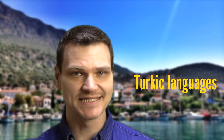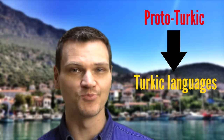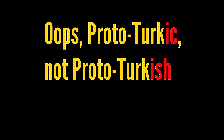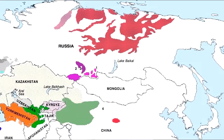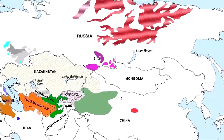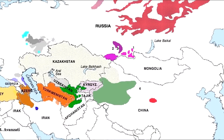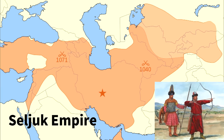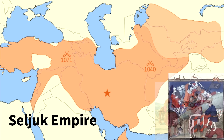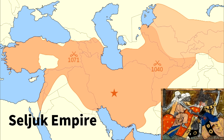All Turkic languages descended from a theoretical language called Proto-Turkic. The Turkic peoples originated in Central Asia, and through migration they expanded over a wide area, extending from Siberia down through China and Central Asia, through the Middle East, up into the Balkan area, and even north of the Black Sea. Oghuz Turkic, the ancestor language of modern-day Turkish, was brought to Anatolia by the Seljuk Empire, a Turkic empire in the 11th century CE.